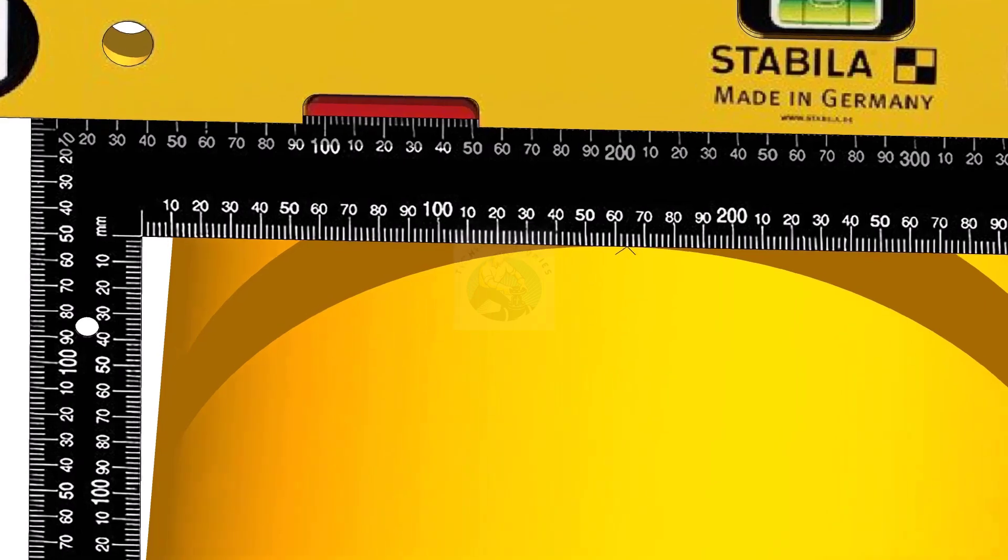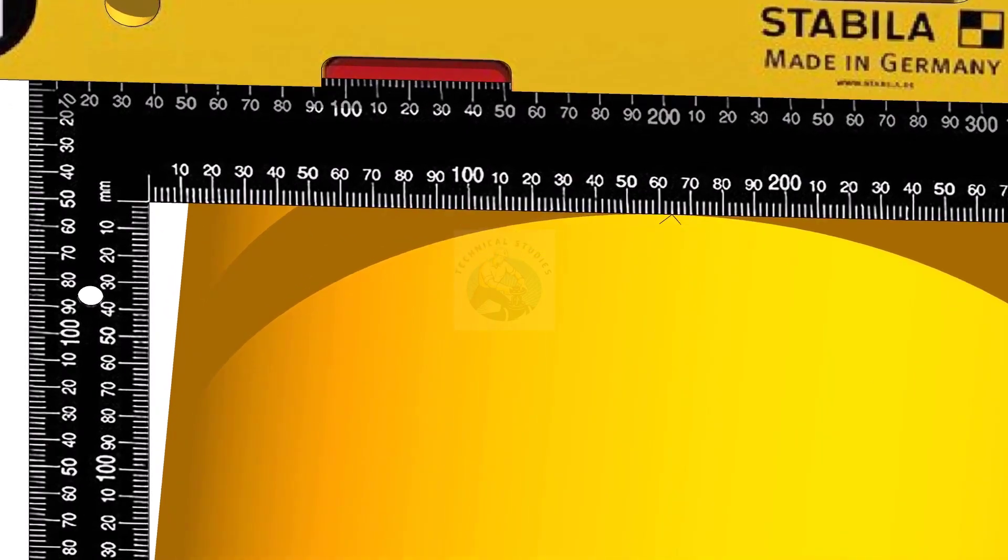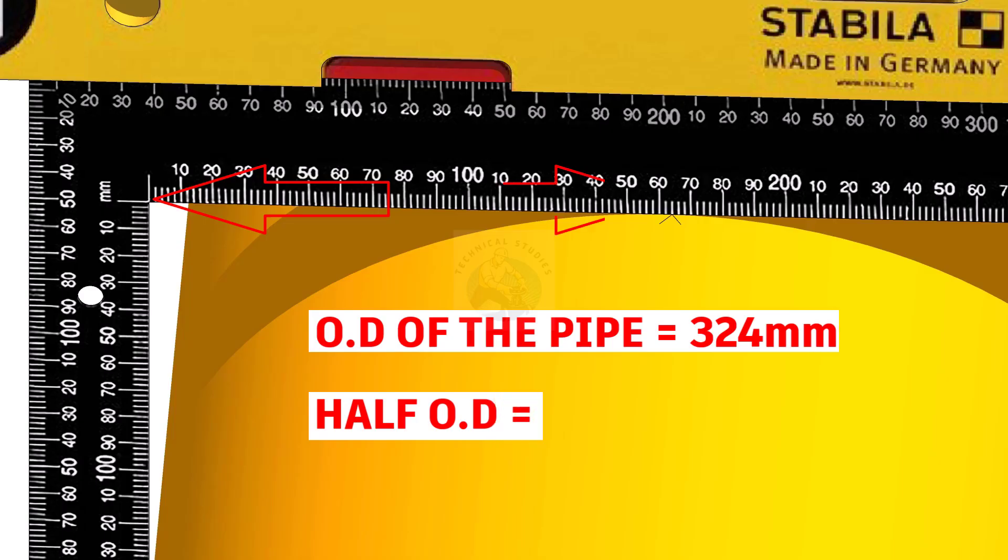Mark half diameter of the pipe on the top of the pipe as shown. Since the OD of this pipe is 324mm, I marked 162mm here.